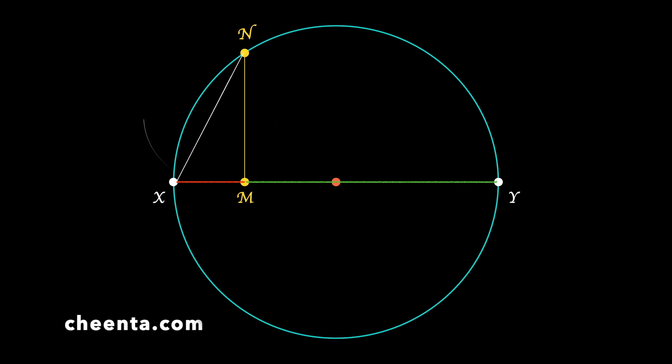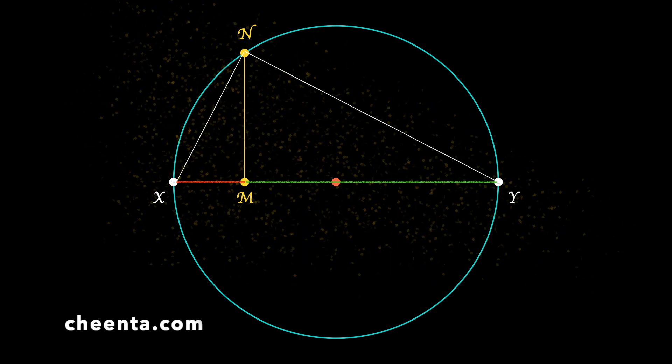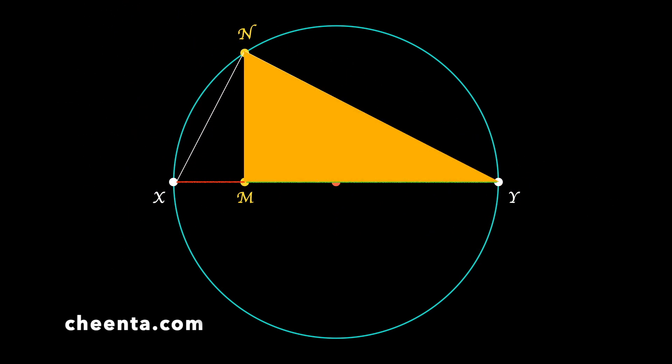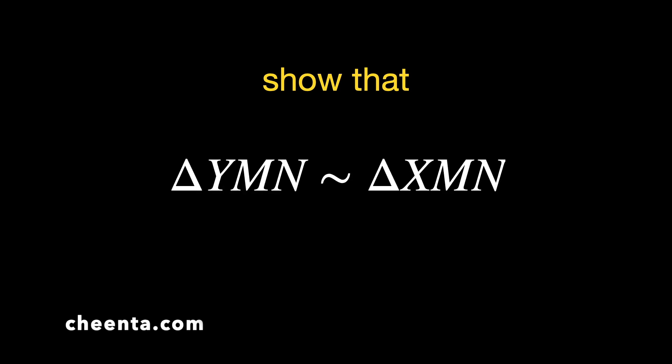Join XN and YN. And then look at the triangles YMN and XMN. These two triangles, YMN and XMN. We will show that these two triangles are actually similar. You can pause the video here and give it a try.